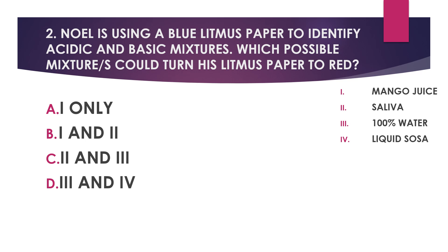Number two: Noel is using a blue litmus paper to identify acidic and basic mixtures. Which mixture could turn his litmus paper to red? 1) Mango juice, 2) Saliva, 3) 100% water, 4) Liquid sauce. Choices: A) One only, B) One and two, C) Two and three, D) Three and four.